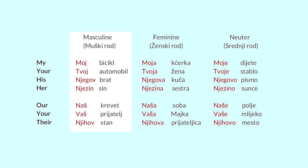Мой бицикл — my bicycle. Твой автомобиль — your car. Негов брат — his brother. Незин сын — her son. Наш кревет — our bed. Наш приятель — your friend. Нихов стан — their apartment.